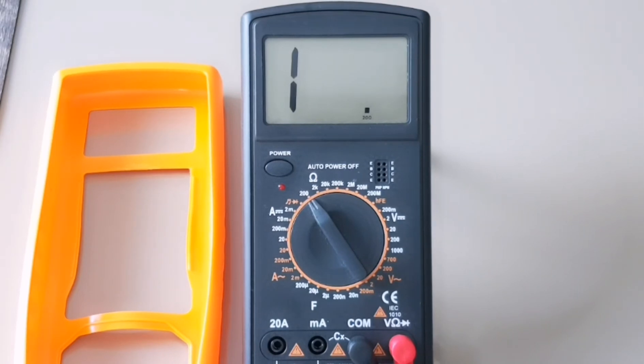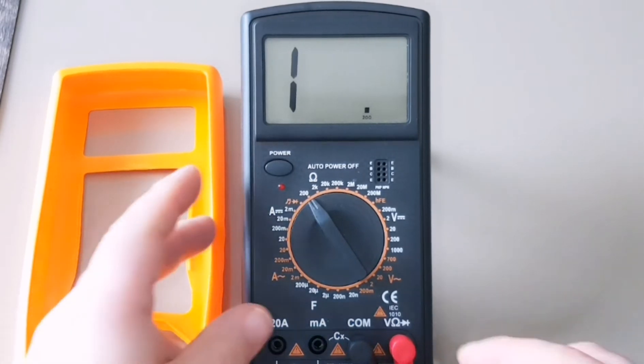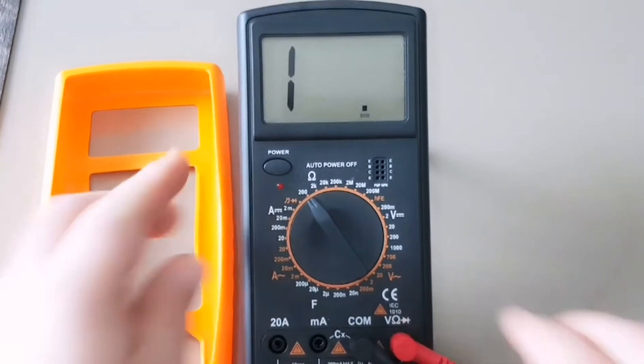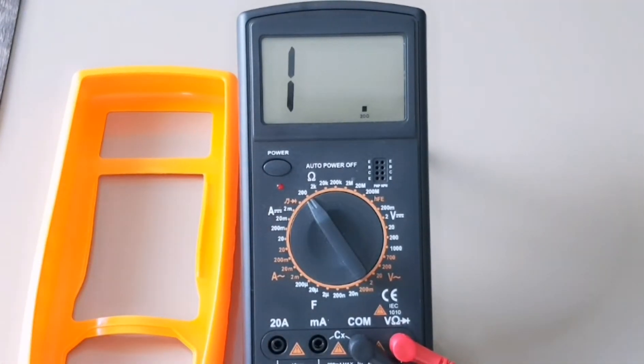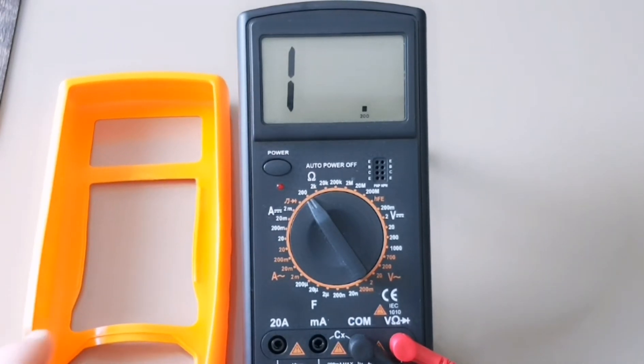Today we're looking at the XLDT9205A. This is a non-auto ranging multimeter, an inexpensive multimeter. Retails approximately $15 US out of Asia. And as I had mentioned, it is non-auto ranging, but it is, in my experience at least, a fairly accurate multimeter.